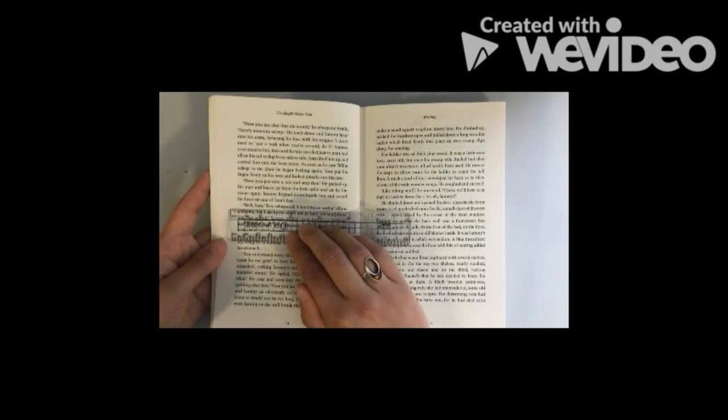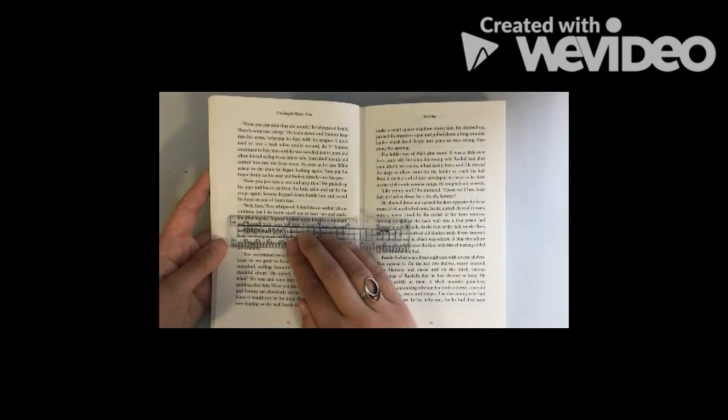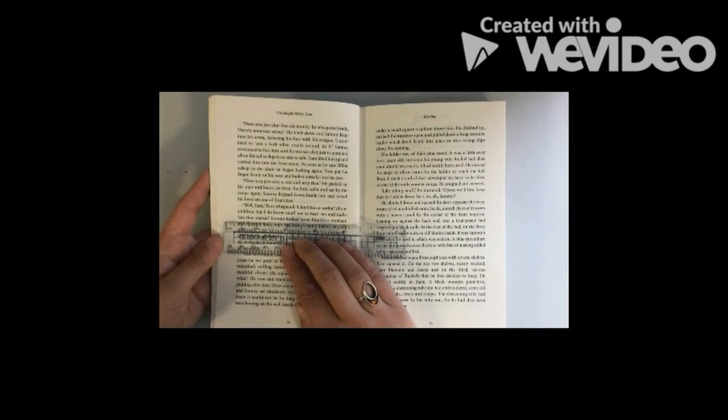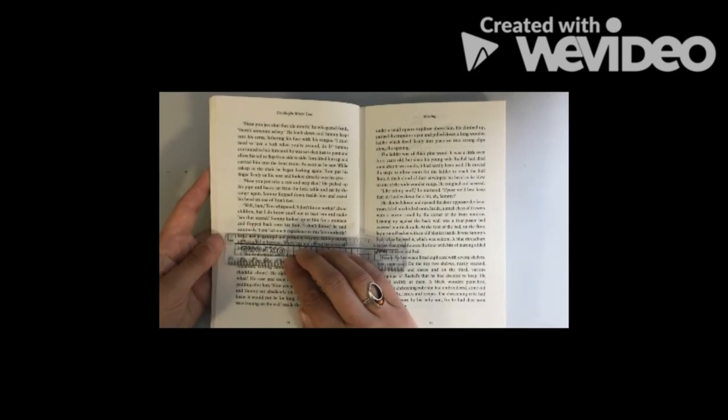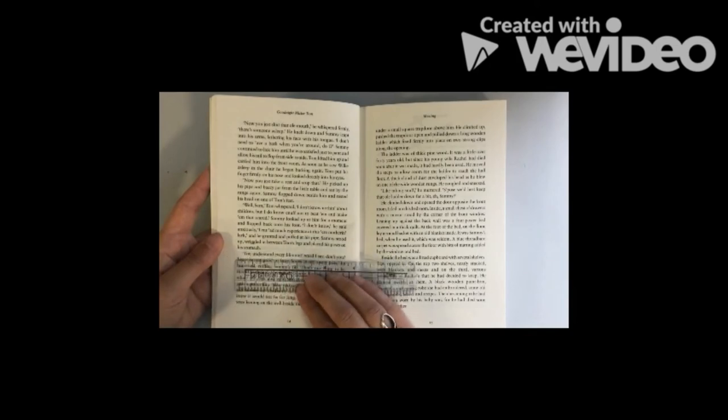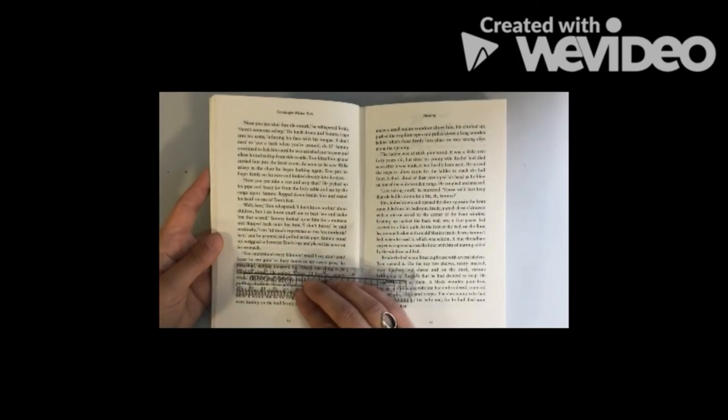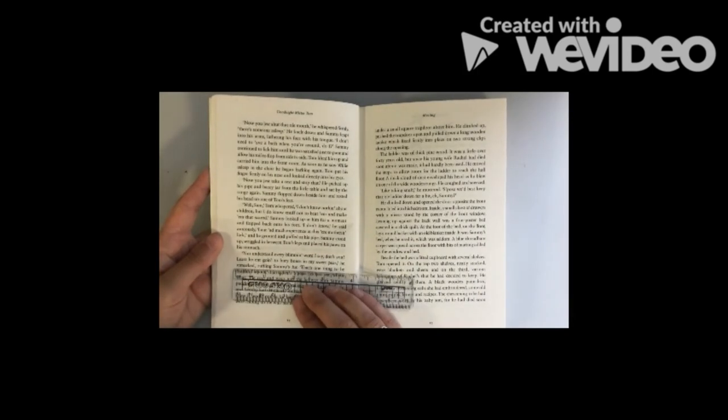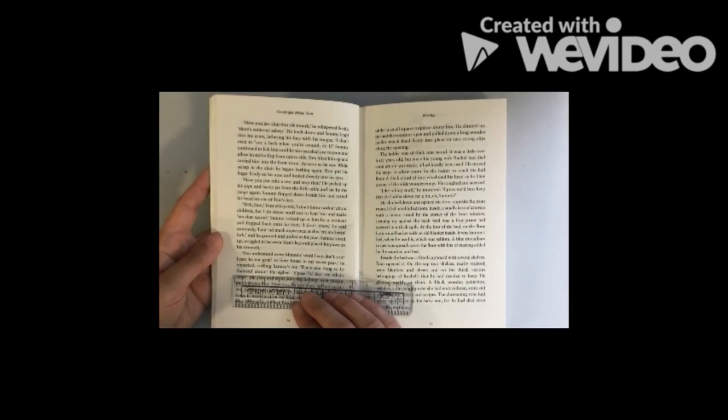He looked at the poker leaning against the range. He never thought. No, surely not, he murmured. Oh, Thomas Oakley, where have you landed yourself? There was a sound of scratching at the front door. More trouble, he muttered. Sammy bounded in and jumped around his legs, panting and yelping. Now you just shut that old mouth, he whispered firmly. There's someone asleep. Well, Sam, Tom whispered, I don't know nothing about children, but I do know enough not to beat them and make them that scared. I ain't had much experience at this ear mother-in-lark.